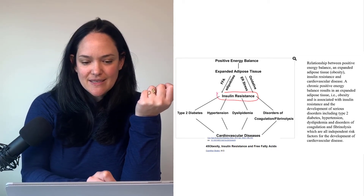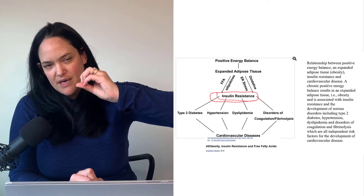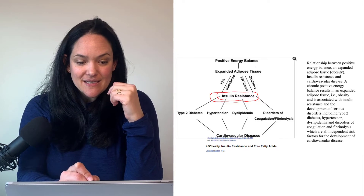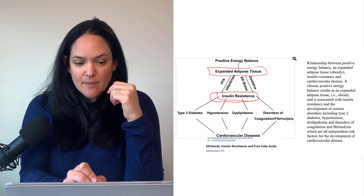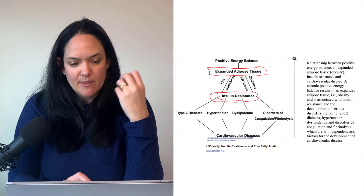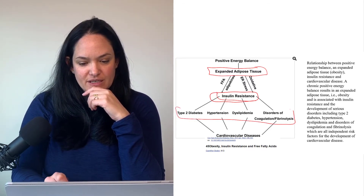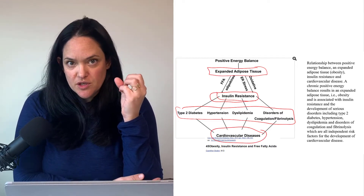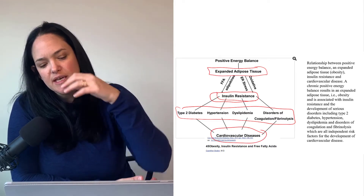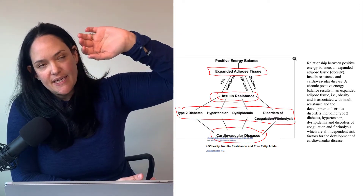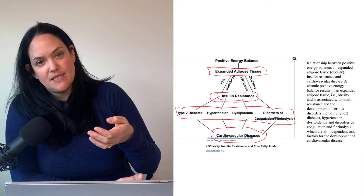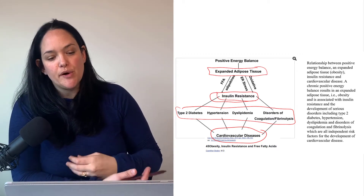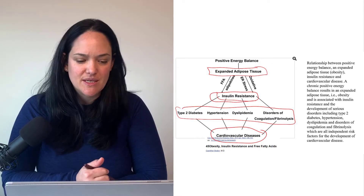Insulin resistance is one of those key intermediate points that links the expanded adipose tissue mass — specifically white adipose tissue — with a number of different diseases and conditions that also increase the risk of cardiovascular disease. So insulin resistance is part of promoting type 2 diabetes, but it's also part of promoting cardiovascular disease, though that's not the only contributing factor.